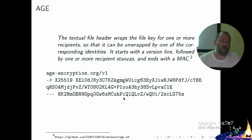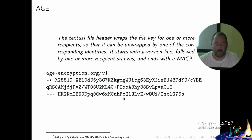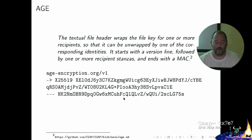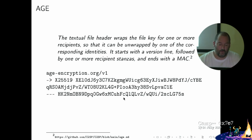Then we have this more modern file encryption implementation: AGE, depending on how you pronounce it. This is the AGE specification for how they encrypt. Basically they do the same thing. Even modern tools use the same concept of a hybrid crypto system. AGE was designed around 2010 and is deployed today. Nothing really changed except maybe how Macs are calculated and some details. This is pretty boring and old-school stuff.